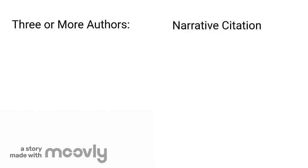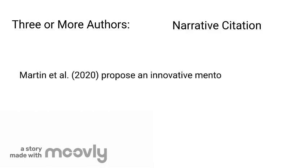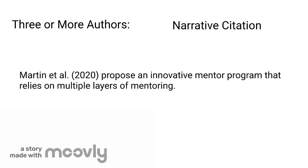Here is an example of three authors using narrative citation: 'Martin et al. (2020) proposed an innovative mentor program that relies on multiple layers of mentoring.' Note that because 'Martin et al.' stands for 'Martin and others,' we use a plural verb, 'proposed.' In addition, no comma is needed between the first author's name and 'et al.'